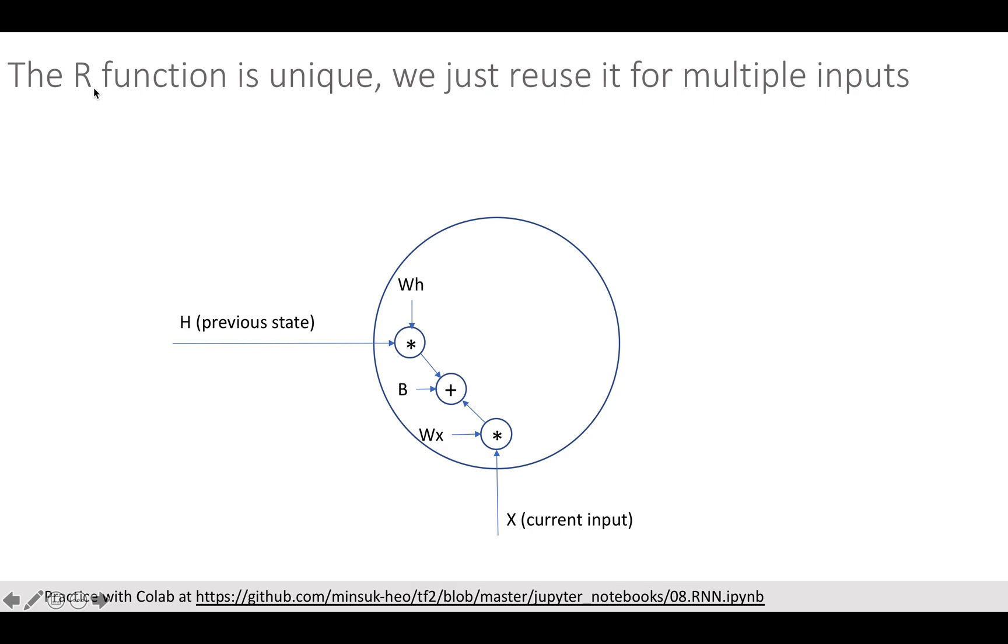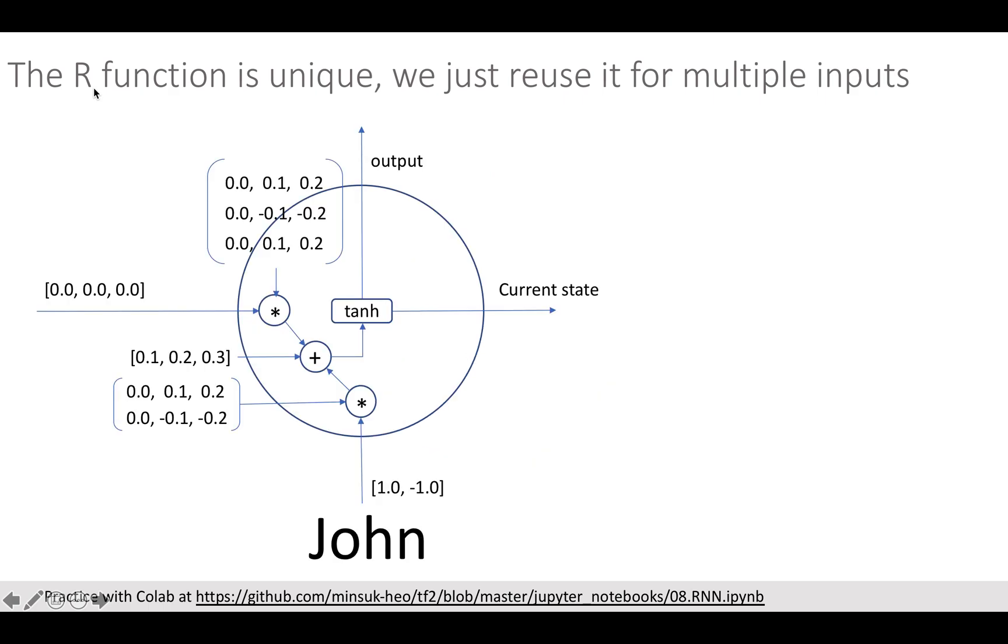We add these two values with bias and the value goes to tanh activation function. Finally the tanh output will be returned as output and state. Let's practice with real numbers here. Let's suppose John's encoding is 1 and minus 1. Here we go. First the encoding will be multiplied with weight.